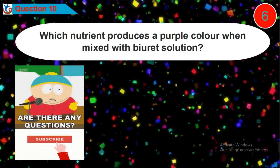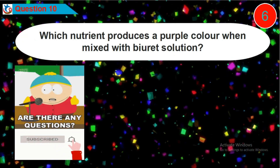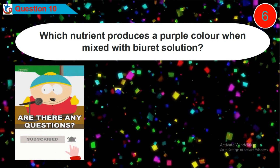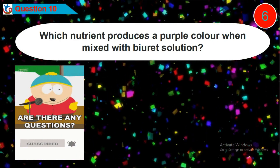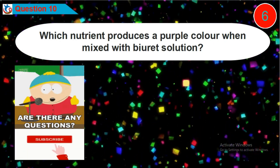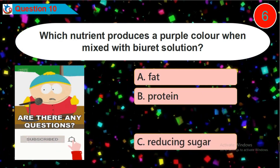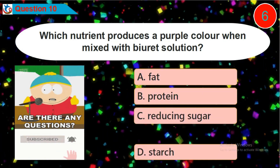Question 10: Which nutrient produces a purple color when mixed with Biuret solution? Is it option A, B, C, or D?